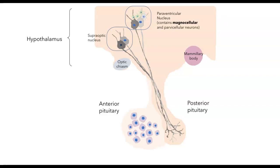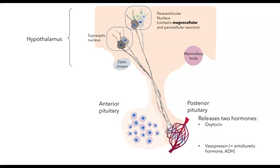For now, I want to focus on the ones that are involved in the posterior pituitary. These magnocellular neurons each produce one of two different hormones, either oxytocin or vasopressin. Both the supraoptic nucleus and the paraventricular nucleus contain neurons that release each of these hormones. These peptide hormones are released not onto other nerve cells, but into a capillary system, and from here they can be carried to cells in the rest of the body.